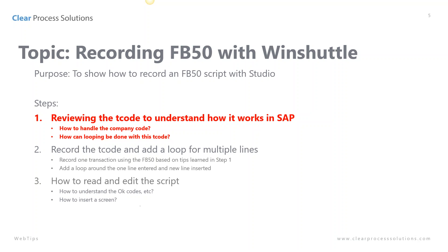First we're going to review the T code to understand how it works in SAP. Then we're going to actually record the T code and add some looping for our multiple line entries. I'm also going to show you how to read your script and how to edit your script. This is a basic transaction training, but there'll be a lot of good tidbits for those of you that might be more advanced.